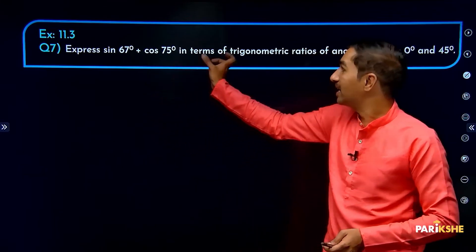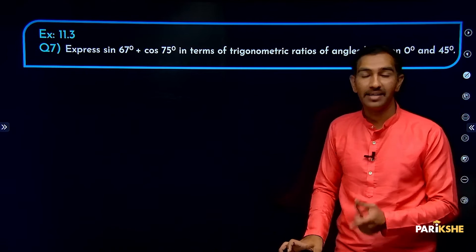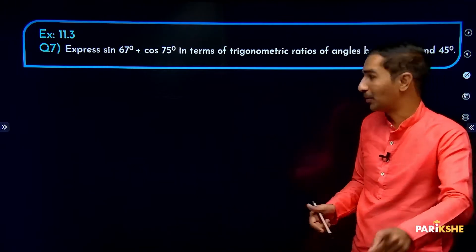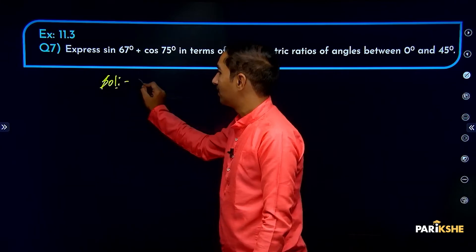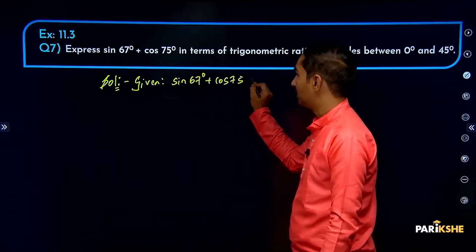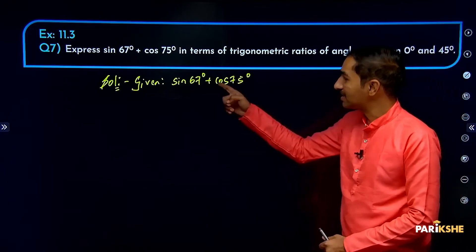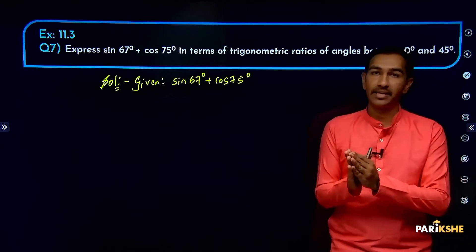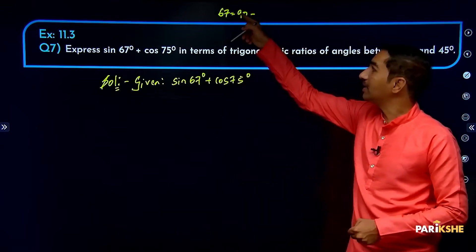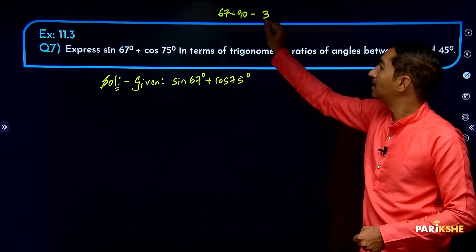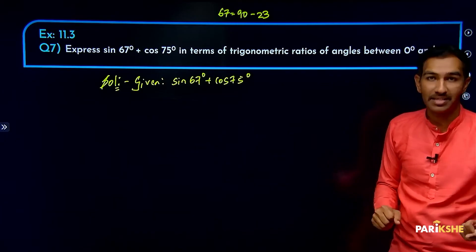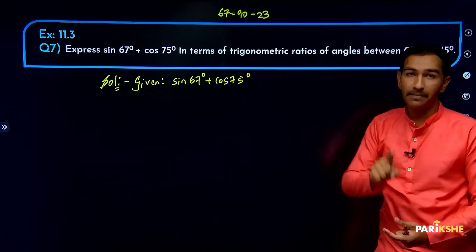The given expression needs to be re-expressed so that all angles are between 0 and 45 degrees. For sin 67 degrees, with respect to 90, we need to find what to subtract: 90 minus what gives 67? That is 23. So 67 can be written as 90 minus 23.